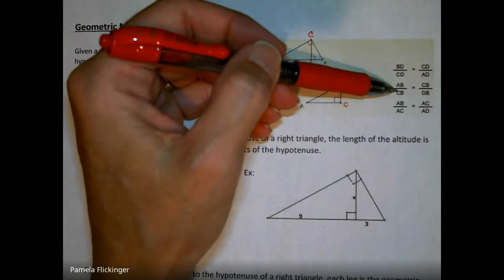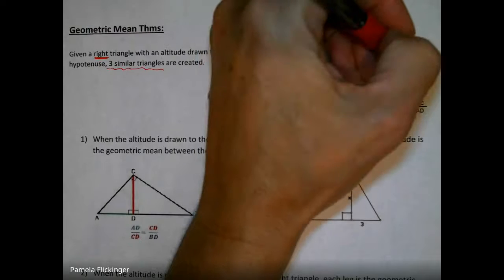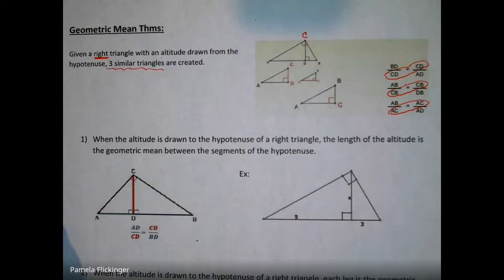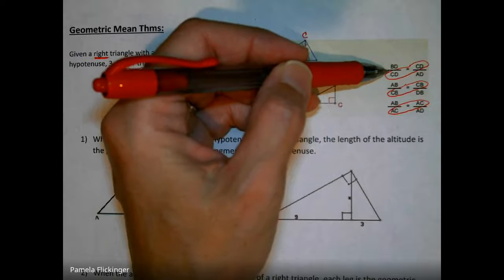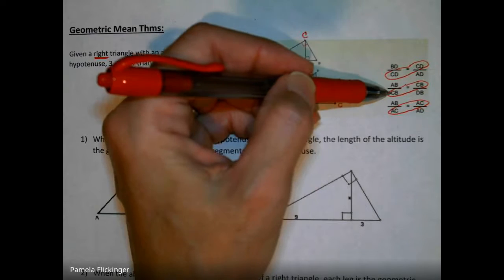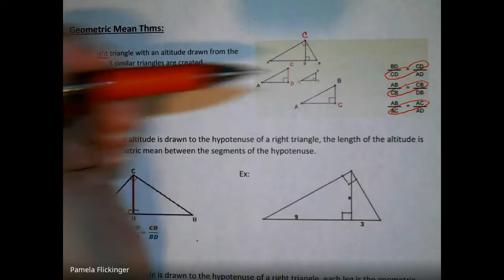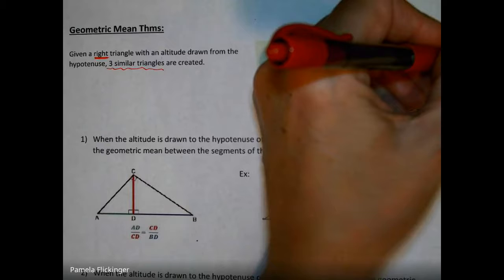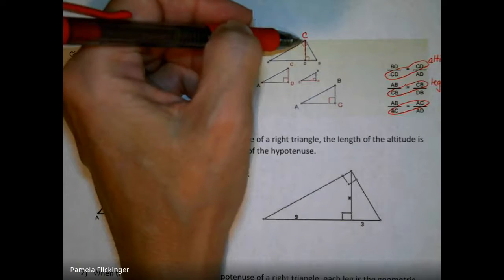They also showed a couple of the proportions that can be written. One thing to notice is that in each proportion, the middle numbers are the same — that's what we call the geometric mean. In the first ratio, CD is the geometric mean between the other two sides. In the second, CB is the geometric mean. In the third, AC would be. Looking at the picture, CD is actually the altitude, CB is one of the legs, and AC is the other leg.